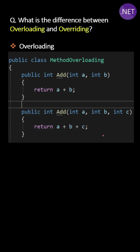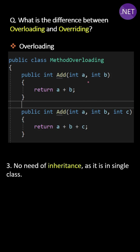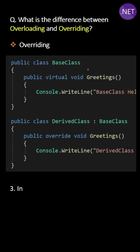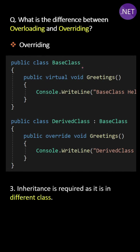The third difference is: in overloading, there is no need for inheritance, as everything is in a single class. Whereas in overriding, inheritance is required since the methods are in different classes — one base class and one derived class.